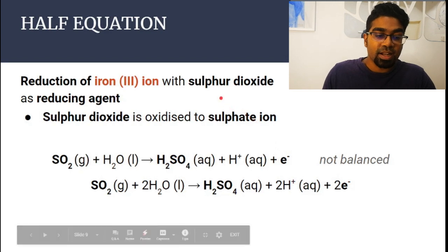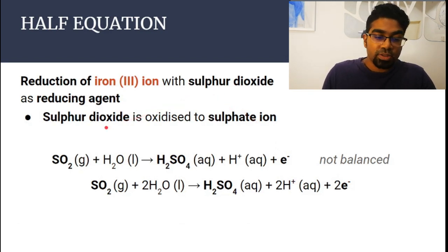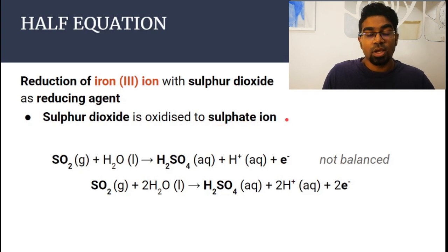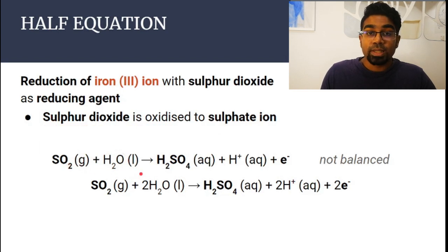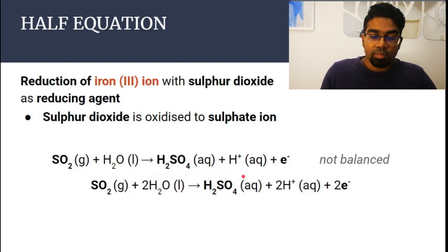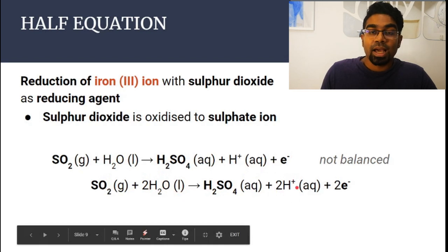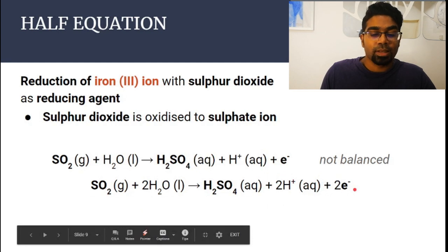Next, let's look at sulfur dioxide as a reducing agent. Sulfur dioxide is oxidized to sulfate ion — remember, reducing agents are themselves oxidized. Sulfur dioxide reacts with water to form sulfate ion and hydrogen ions. First, we balance the number of atoms: we need two moles of water and two hydrogen ions. The charge on the left is zero, so the charge on the right must also be zero. Since we have two plus on the right, we add two electrons. Now the number of atoms are balanced and the charge is balanced, so this is our half equation.